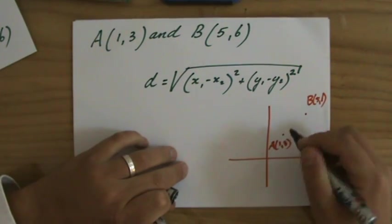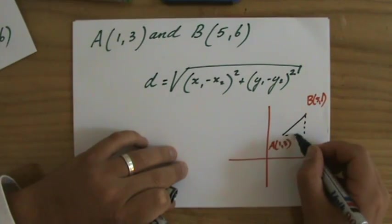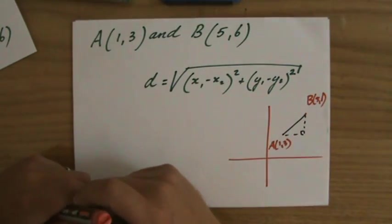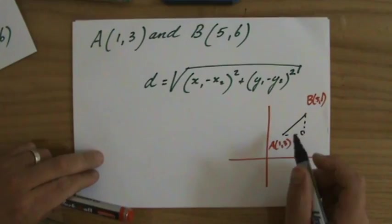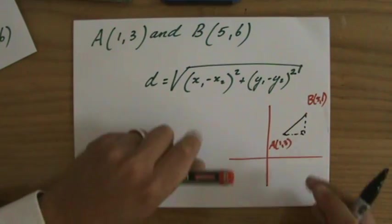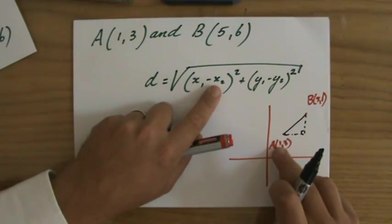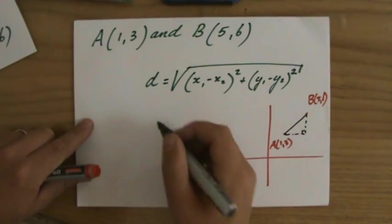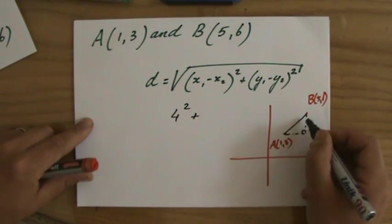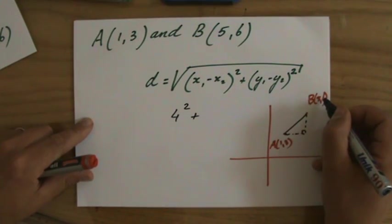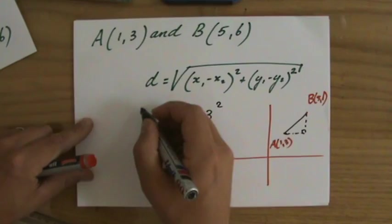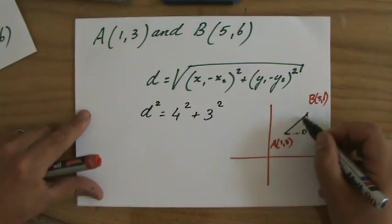And then you sketch the line segment, and you sketch the right angle triangle, because to calculate the length, we can use Pythagoras in right angle triangles. And then you have a look, well, what is the length of this side? That is my x1, 5, minus my x2, 1, so 5 minus 1, so that is 4 squared, plus, what is the length there? That is my y1 minus my y2, 6 minus 3, so that is 3 squared. And that is the distance squared, or c squared, the hypotenuse.